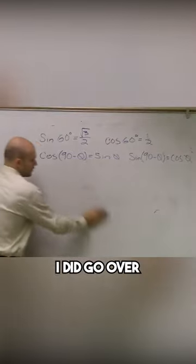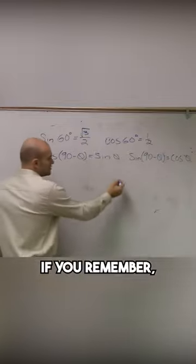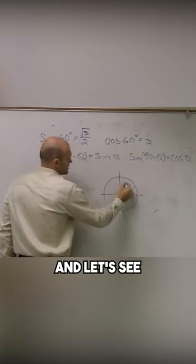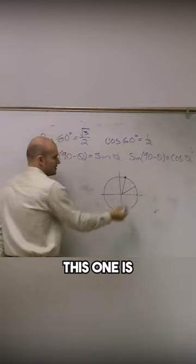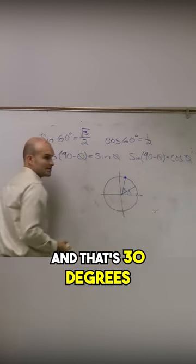I did go over last class period why this works. If you remember, you look at a unit circle and let's see, this one is what we say for cosine - that's 60 degrees, right, and that's 30 degrees.